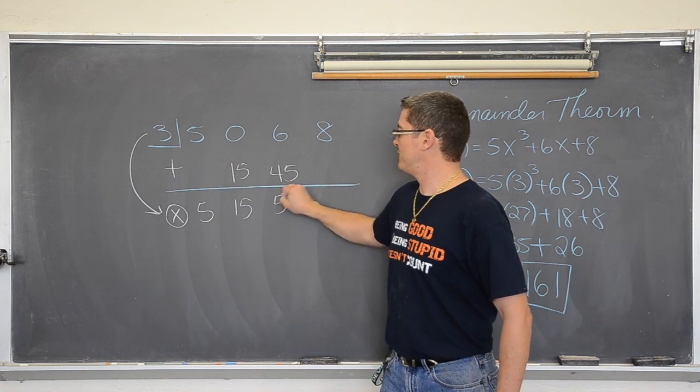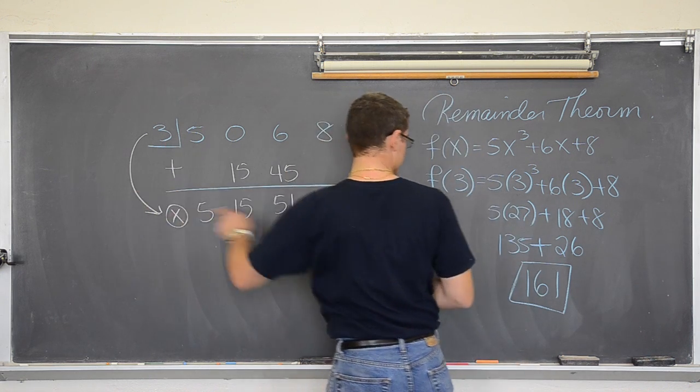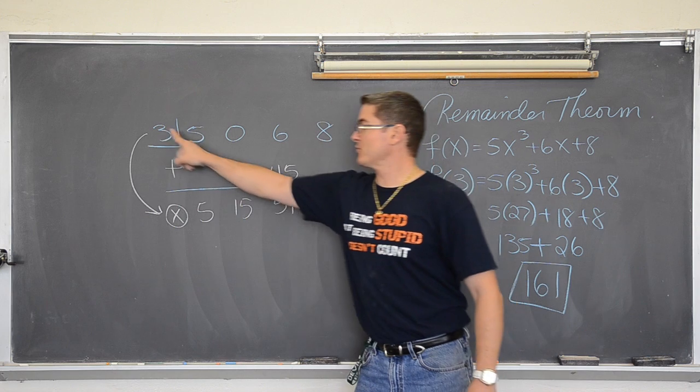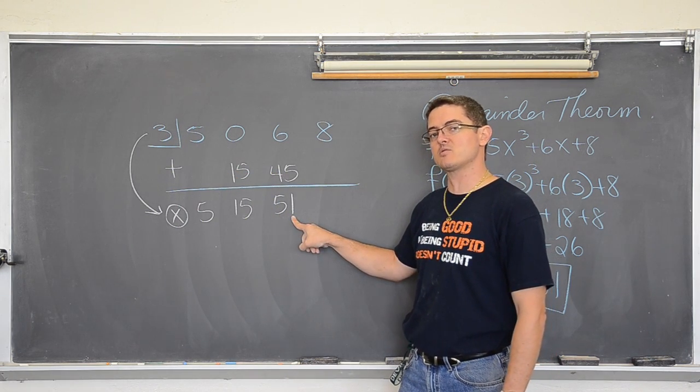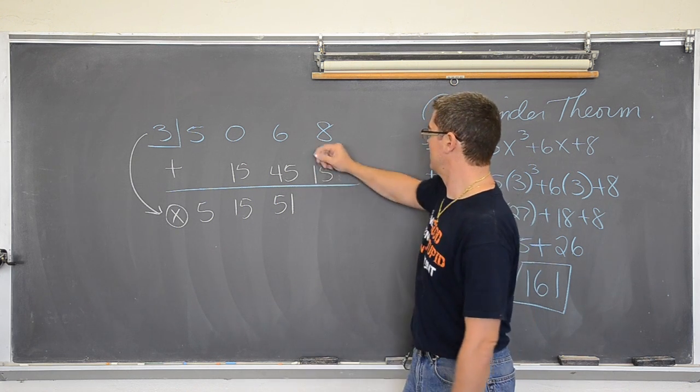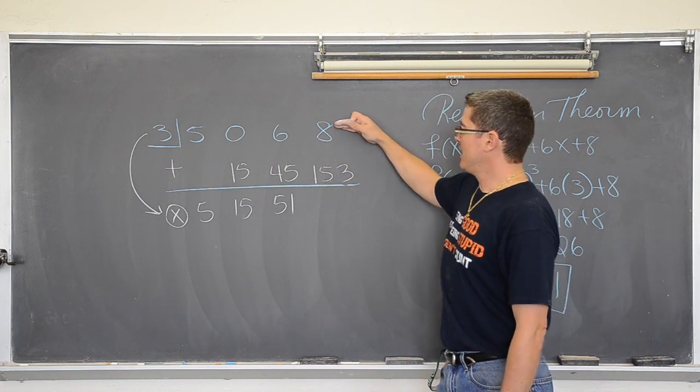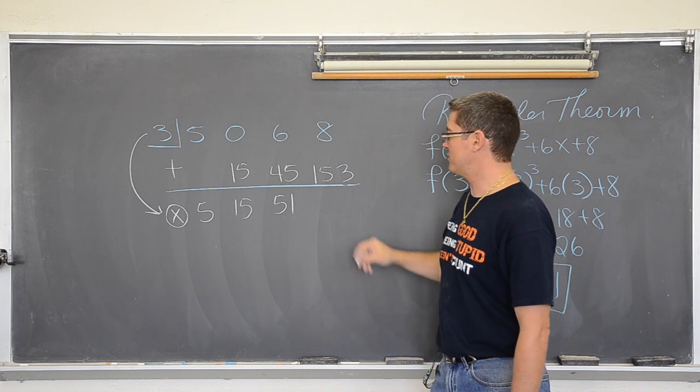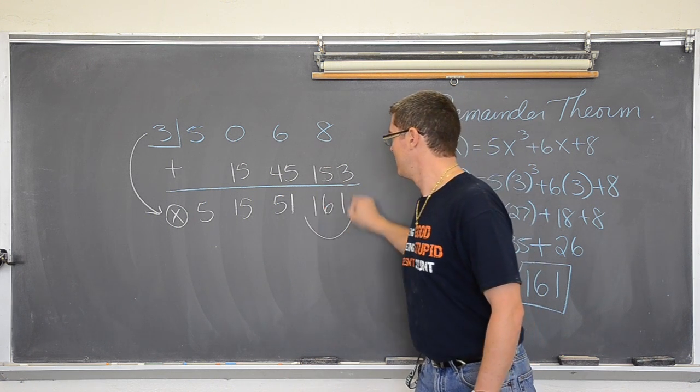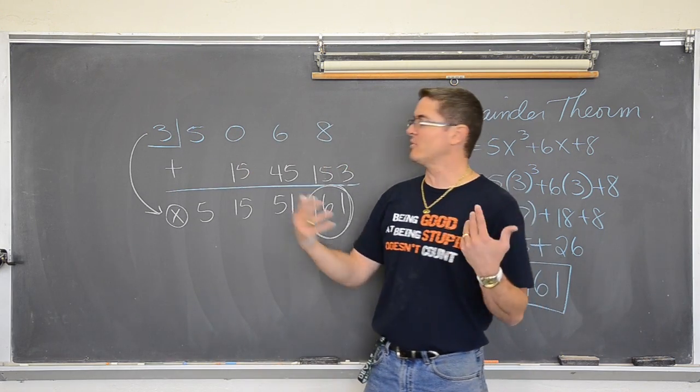Now multiply. Three times fifty-one. Well, three times fifty is one hundred and fifty and three times one is three. So one hundred and fifty-three. Three times fifty-one. And eight plus one fifty-three is one sixty-one. All right. The synthetic division gave us the same answer as we got when we plugged in the number. That synthetic division, that is the remainder theorem.